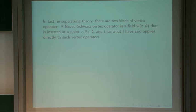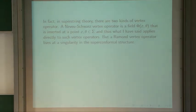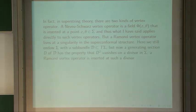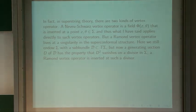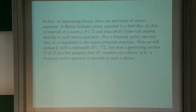In superstring theory there are two kinds of vertex operator. A Neveu-Schwarz vertex operator is a field inserted at a point, so what I've said applies directly to such vertex operators. But a Ramond vertex operator lives at a singularity in the superconformal structure, where a generating section D of the distinguished sub-bundle has the property that D-squared vanishes on a divisor. The condition that D-squared and D are linearly dependent is essentially one complex condition that defines a divisor. A Ramond vertex operator is inserted at such a divisor.